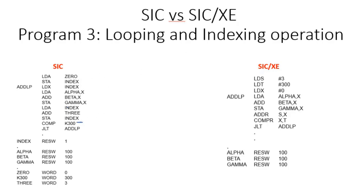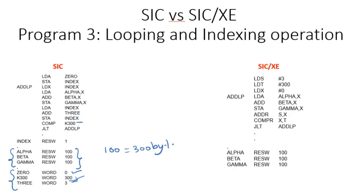Coming to the actual logic of the program, let us go through it line by line. We have declared 3 variables of 100 words each: alpha, beta, and gamma. We are reserving 100 bytes for each array and have defined a few constants. Zero is a word constant. K300 is a word constant — 300 is chosen as the counter limit because 100 words equals 300 bytes.